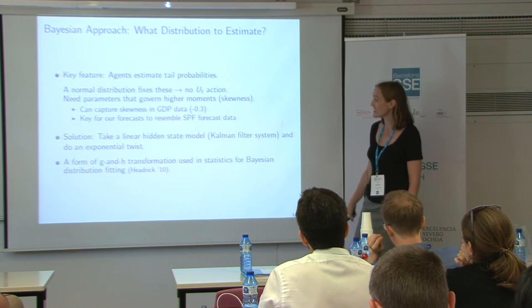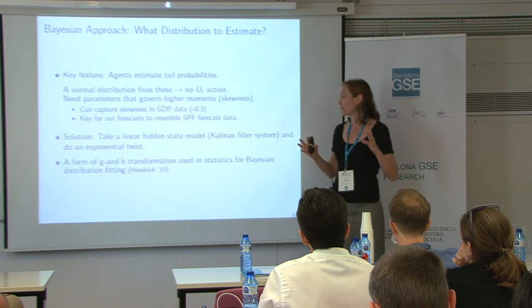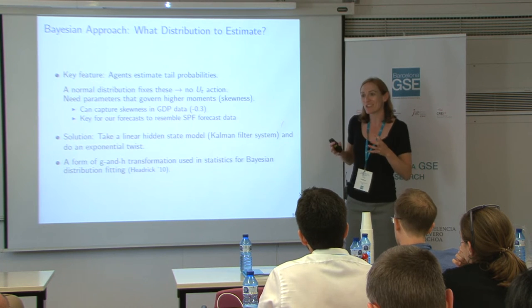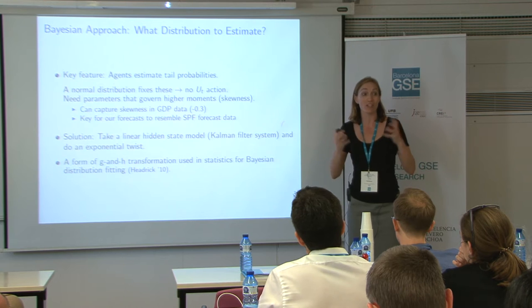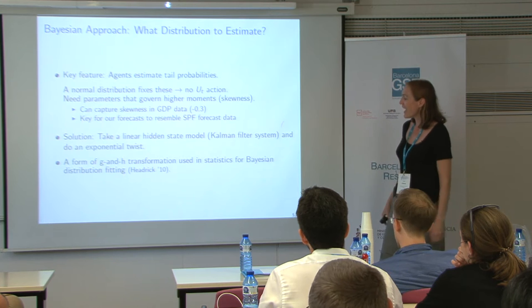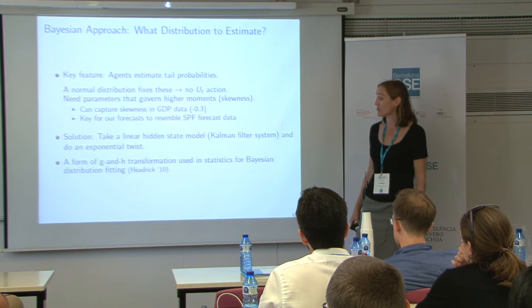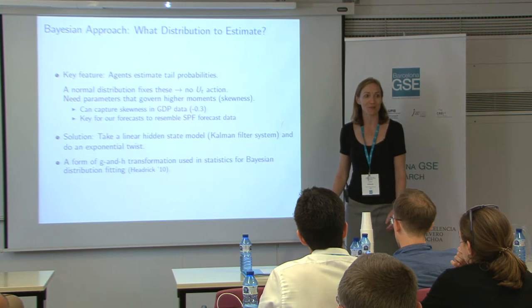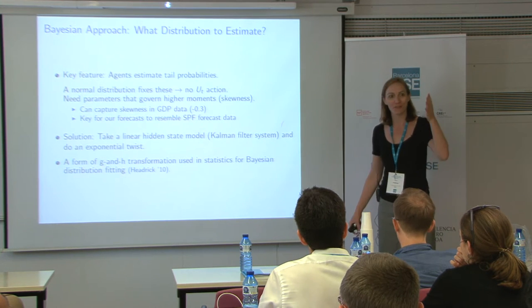Why skewness? The normal has a mean and a variance — let's go one moment further and think about slight deviations from a normal. Also, lots of our macro data has skewness, with asymmetry to it — like GDP, we see much sharper downturns than we do increases. One simple way to put skewness in a low-parameter tractable model for Bayesian updating is to take a linear hidden state model, basically a Kalman filter system, and do an exponential twist. This has no additional parameters except for ones governing skewness, and it corresponds to a G and H transformation in the Bayesian statistics literature.